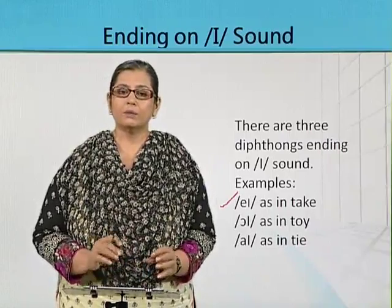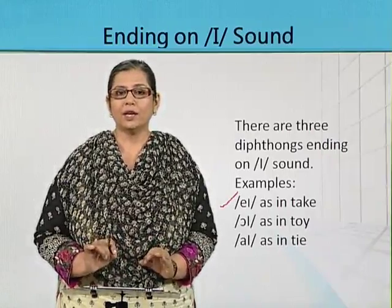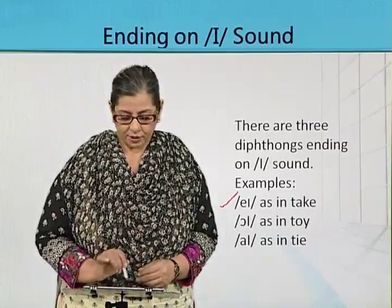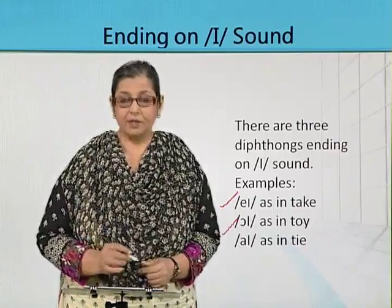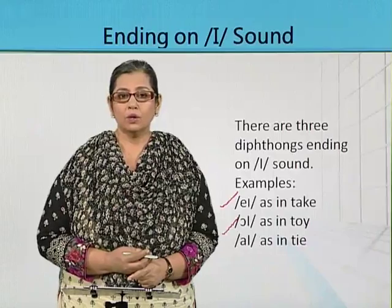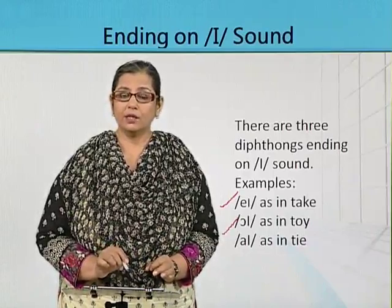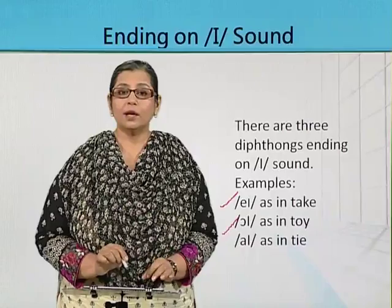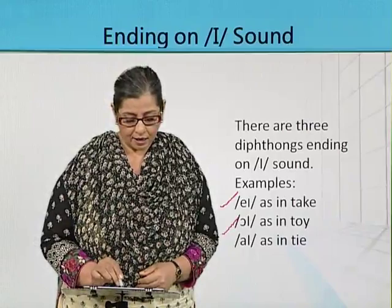For instance, 'baby' — the A in 'baby' has the pronunciation A-E. The second one is O-E, as in the word 'toy'. In the first diphthong the sound was A then E; in the second the sound is O then E.